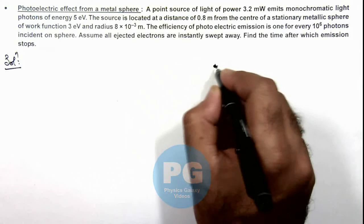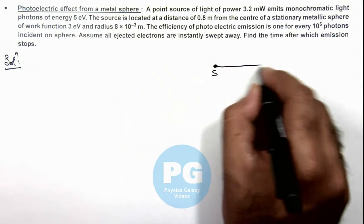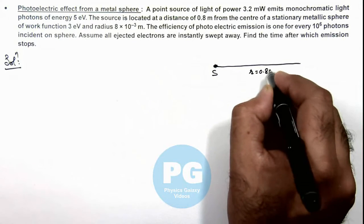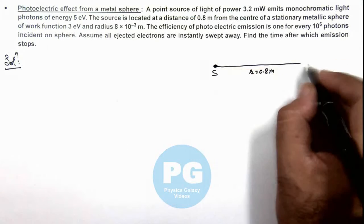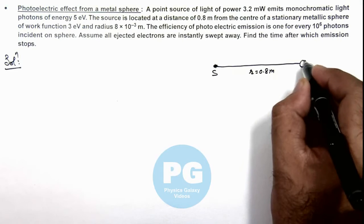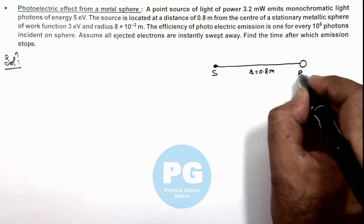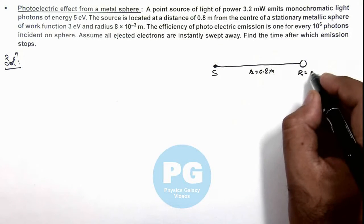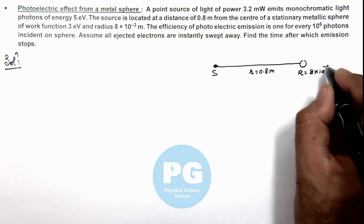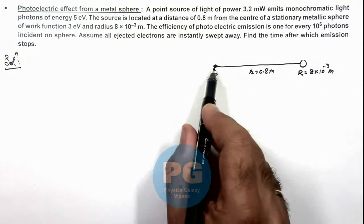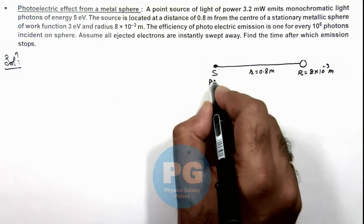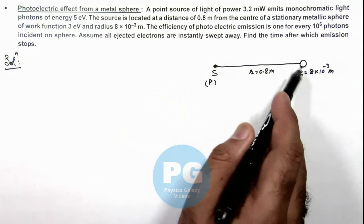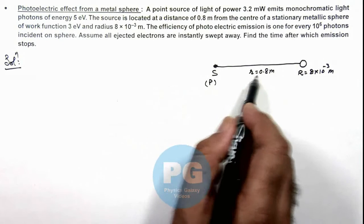If we draw the situation, here this is the source, and at a distance r which is 0.8 meter from the source, we place the sphere, which is very small in size with radius R equal to 8×10⁻³ meter. In this situation, when the source power is P, the intensity of radiation at the location of the sphere is P divided by 4πr².